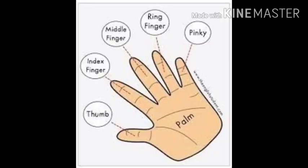We have five fingers in our one hand and each finger has a particular name. The smallest finger is called the pinky finger. बच्चों, जो सबसे छोटी उंगली होती है, उसे हम pinky finger कहते हैं. And the ring finger is between the tallest finger and the smallest finger. और जो ring finger होती है, वो tallest finger यानि कि सबसे बड़ी finger और सबसे छोटी finger के बीच में होती है.